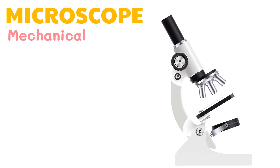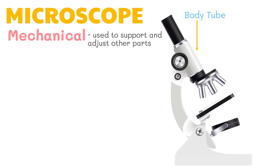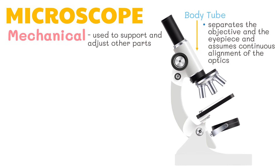Lastly, we have the mechanical parts. These are parts of the compound microscope that are used to support and adjust other parts. First, we have the body tube. It is a tube that separates the objective and the eyepiece and assumes continuous alignment of the optics.